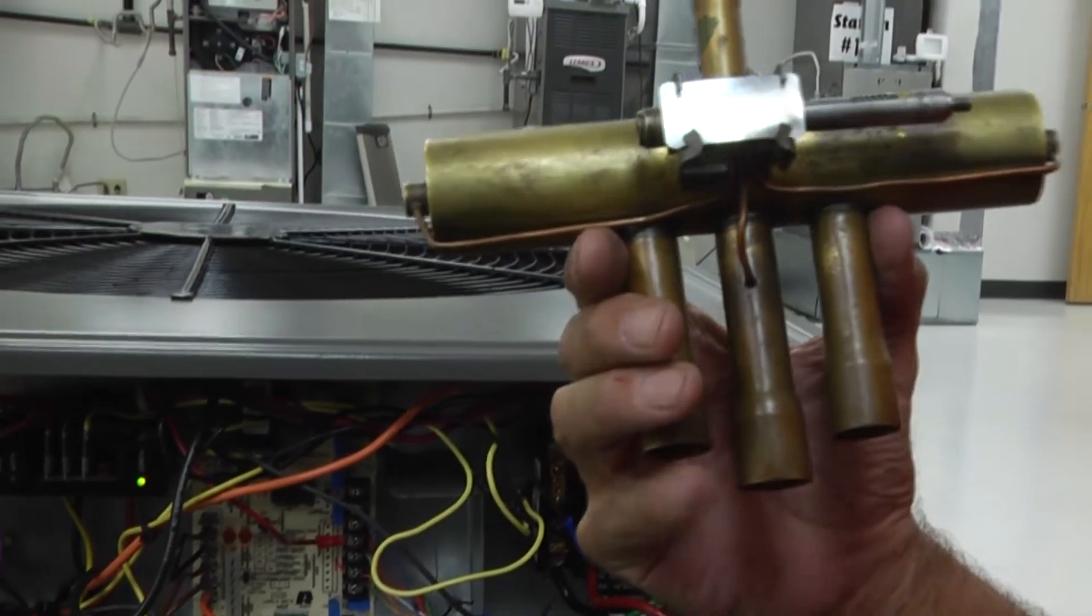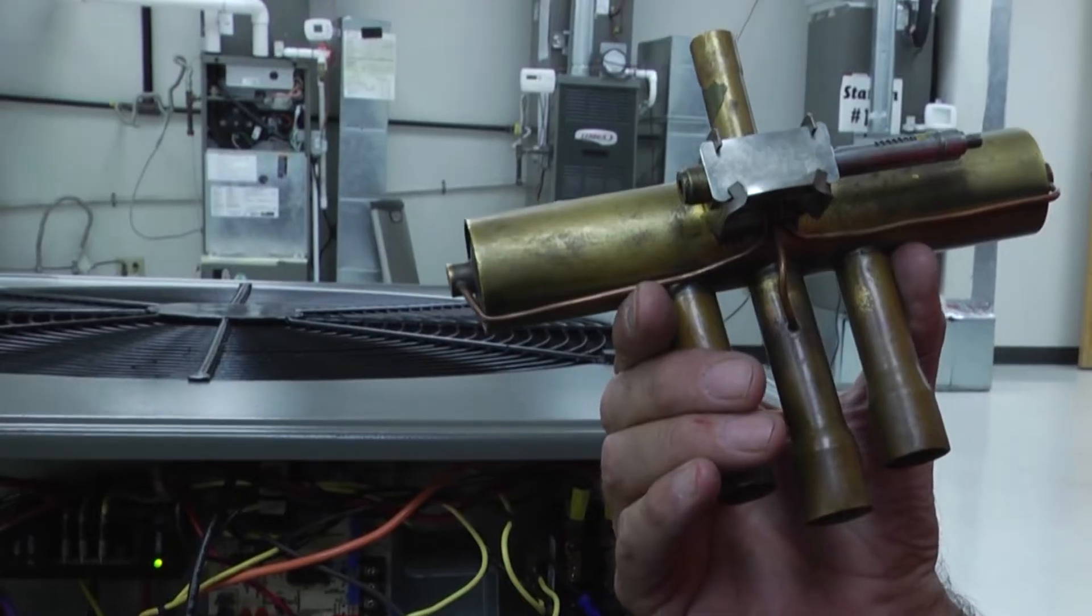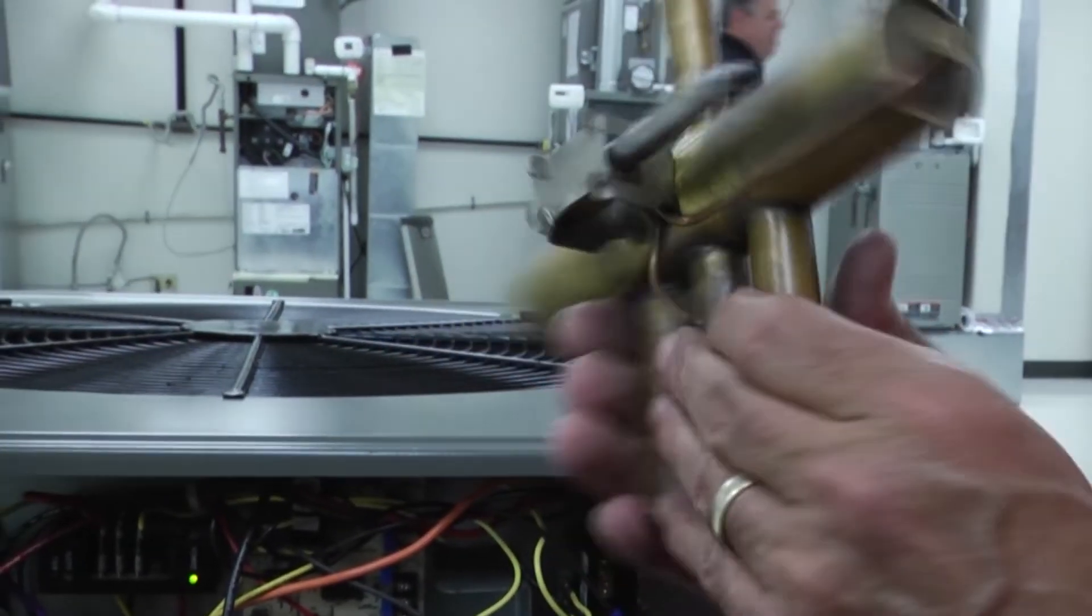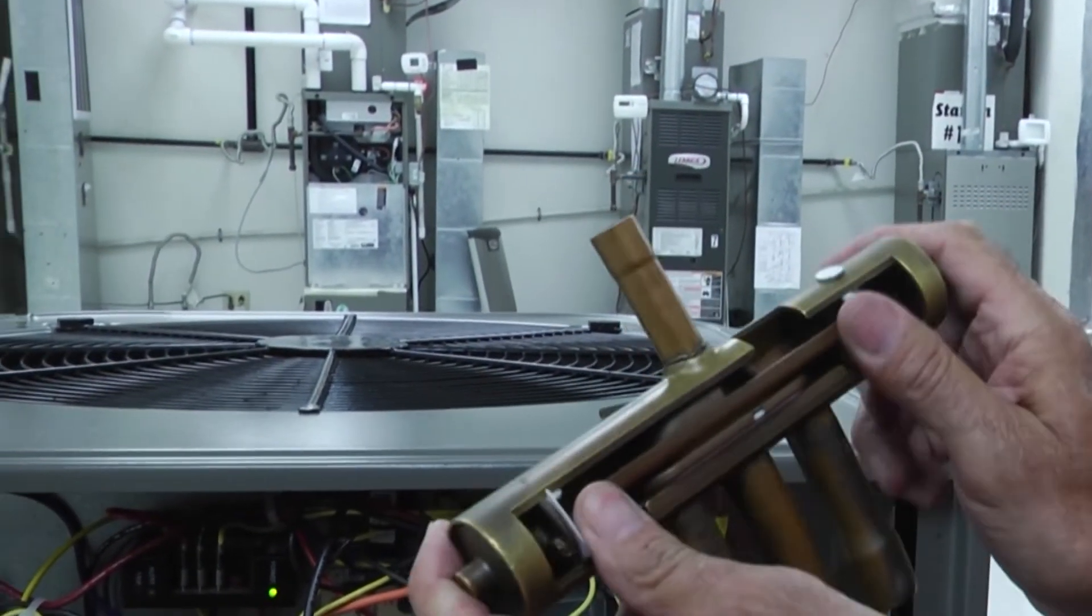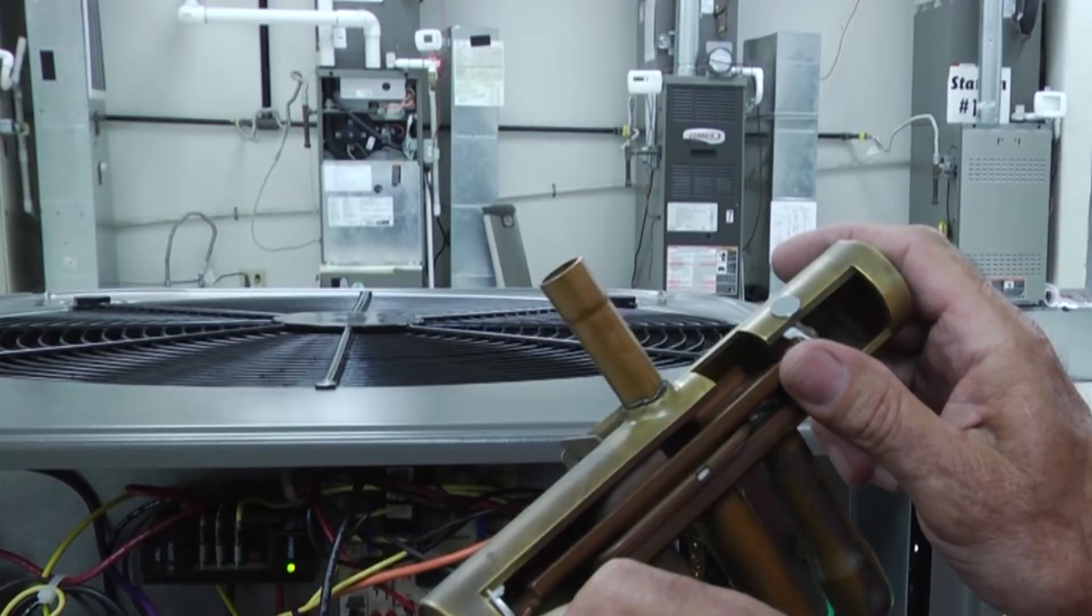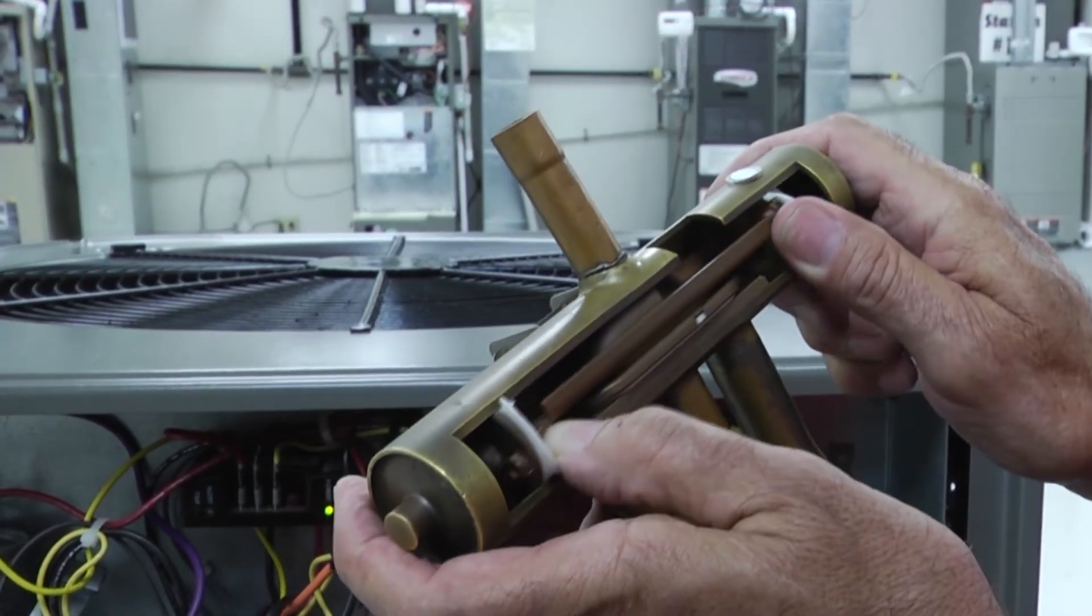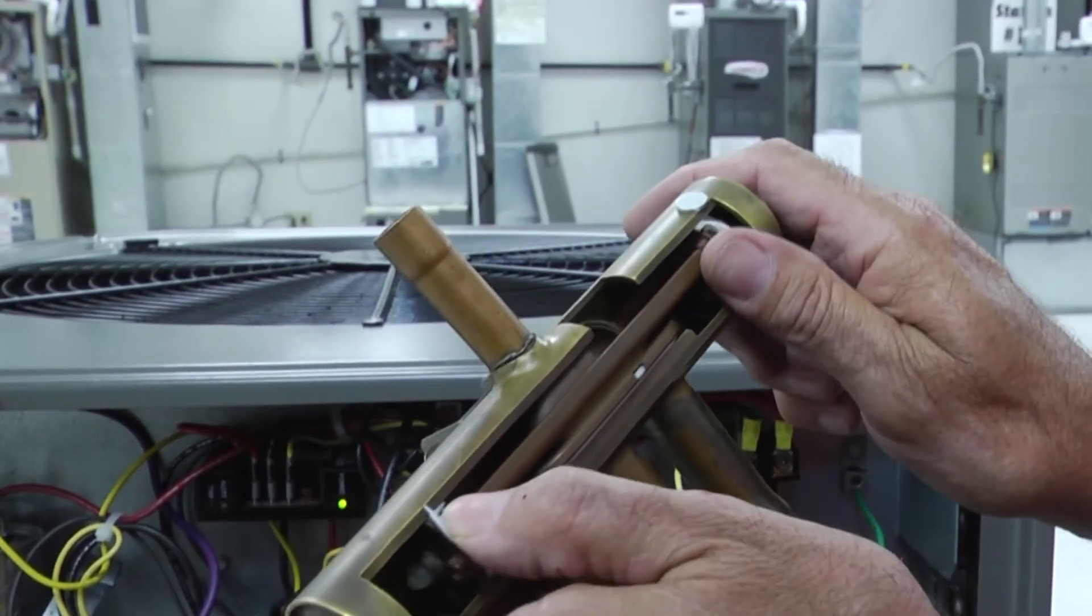I thought what we would do is quickly show a couple ways to diagnose problems or verify a reversing valve is working correctly. We have a cutout of the valve to show what it looks like on the inside. I've also put a little magnet here that you can watch shift back and forth.